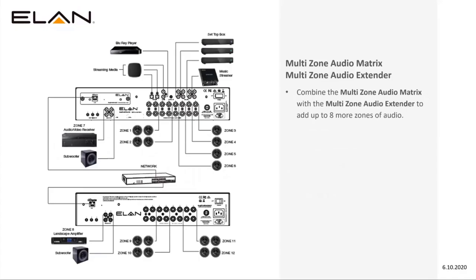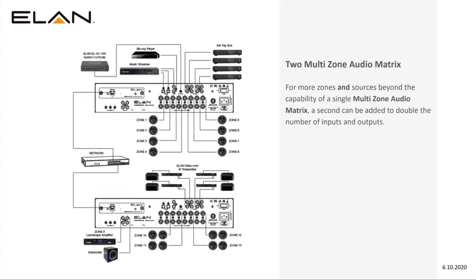As the system grows, you can replace the standard card with the audio over IP NAC card. If you need to add outputs, you can just add another AMP EXT box, which allows you to add up to eight more zones depending on how you configure them. You can keep daisy-chaining those boxes, and that's where you get the flexibility from.